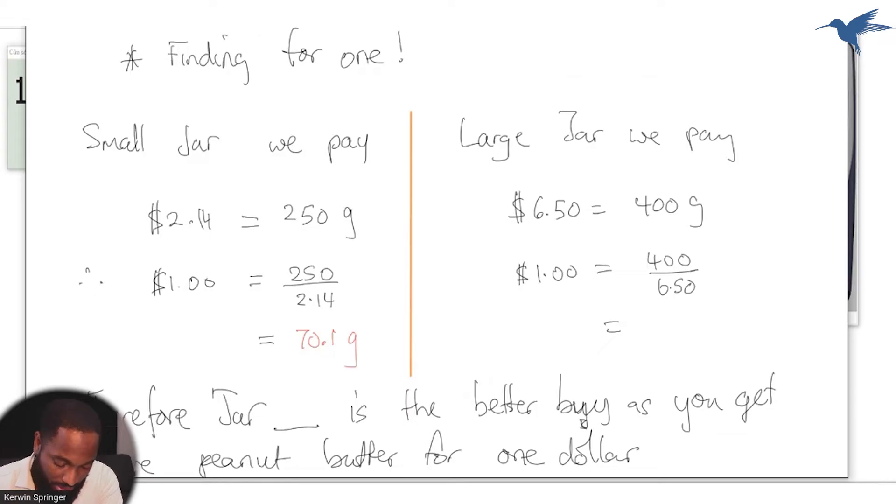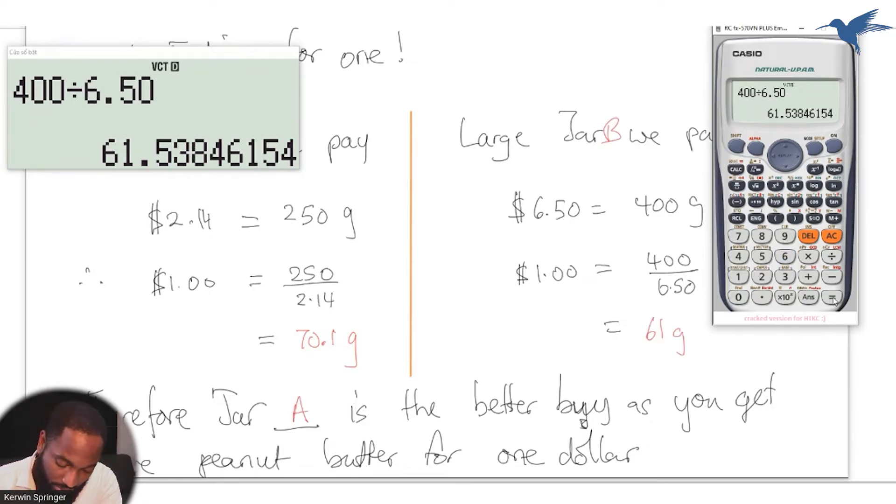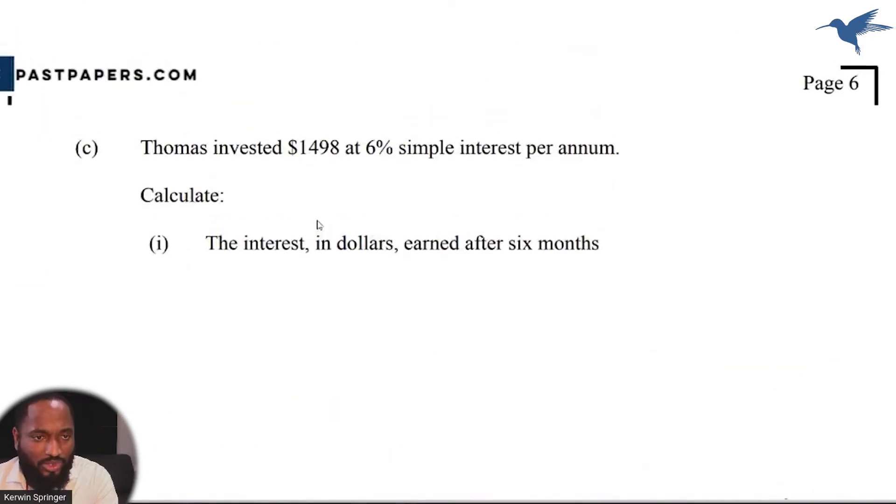And then we had 400 divided by 6.50. This one is only giving me 61 grams. Therefore, jar A is the better buy as you get more peanut butter for one dollar. You actually get 70 grams, approximately 70 grams. Type Y in the chat if you understand that.